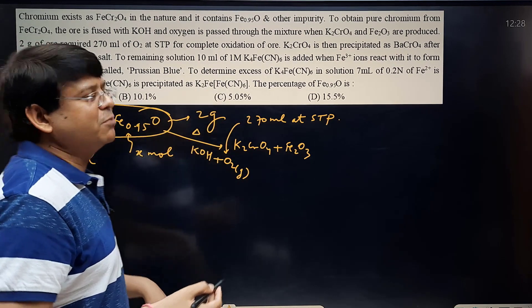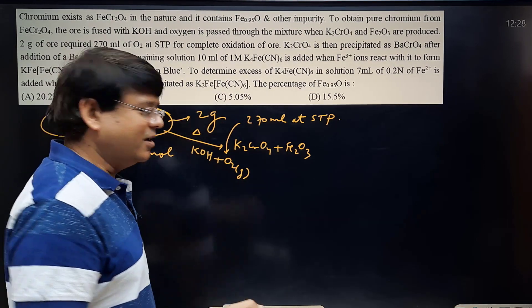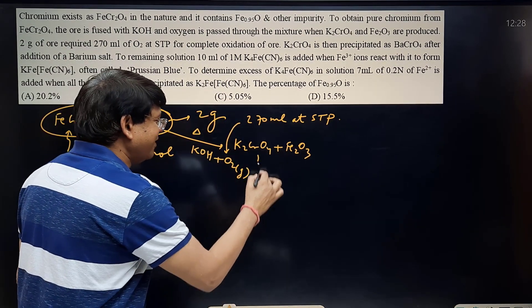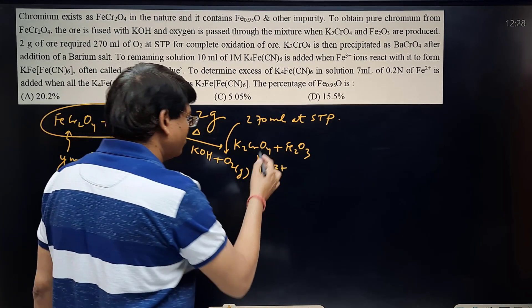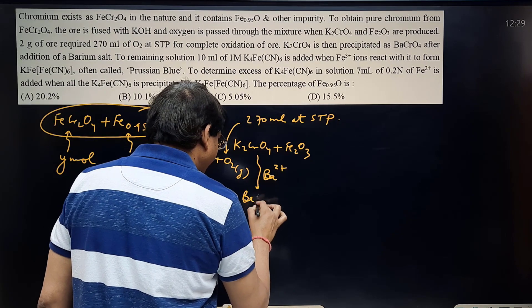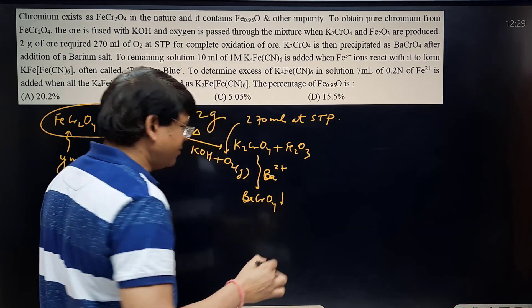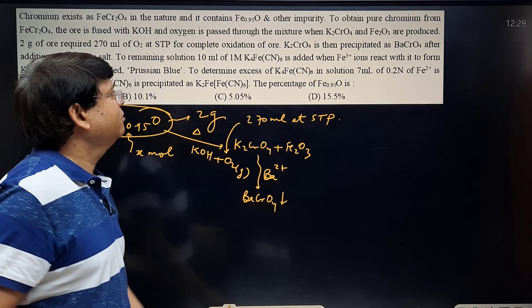K2CrO4 is then precipitated as barium chromate. You must have added barium ion or some soluble salt of the barium ion in the aqueous medium. So barium chromate, this yellow precipitate, has been precipitated.